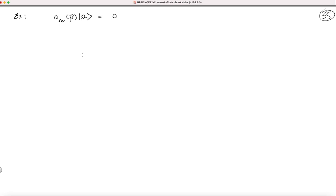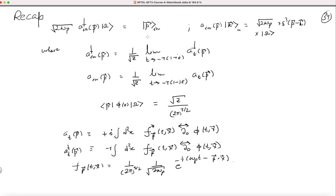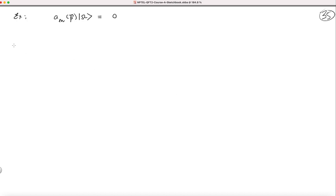Now I know how to create a single particle state by acting with a_in† on omega. I want to know how to create a two-particle in-state, or a three-particle in-state, or a state with any number of particles. You might already guess that, since we have arranged everything to mimic free field theory, our naive guess would be that having multiple a_in†'s acting on vacuum will give you a state with several particles — because that is what happens in free theory.